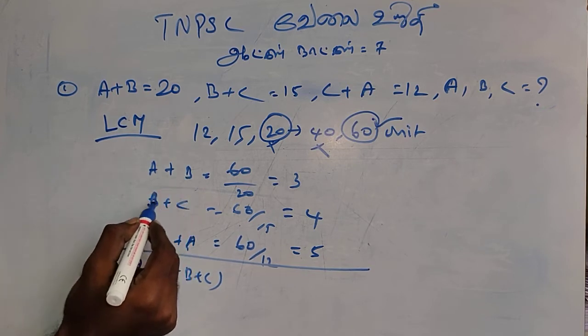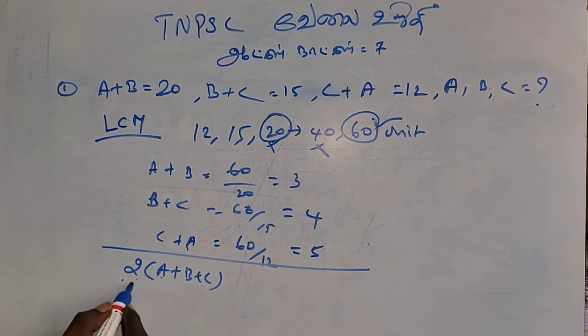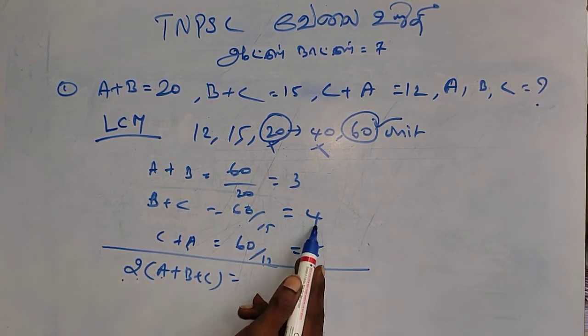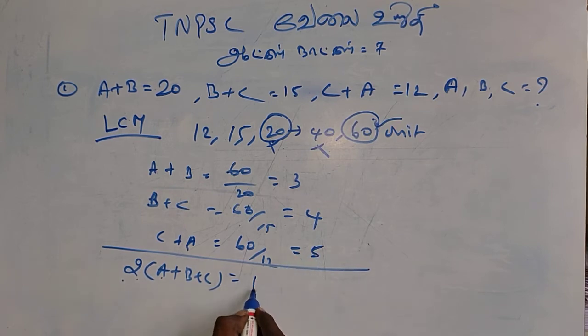So, a plus b plus c, b plus c plus a. So, a plus b plus c is 6. That is 22 by 2 is 6.